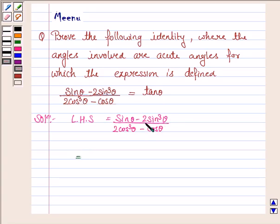We take sin θ common from the numerator, so we have 1 minus 2 sin square θ upon, taking cos θ common from the denominator, we have cos θ into 2 cos square θ minus 1.